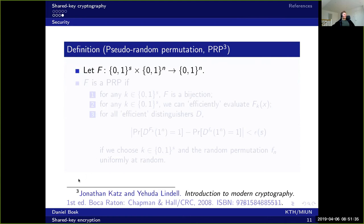The perfect secrecy definition is hard to use in practice, since we need to use the one-time pad and that's not really practical. For instance, if you want to have an encrypted connection to your internet bank, you don't want to exchange that much key material, and you don't want to go to the bank to exchange key material just to use online banking. To get around these limitations of perfect secrecy, we use a computer-scientific definition of security for block ciphers. This definition is also what is used when a block cipher is used as a building block in a more complex protocol.